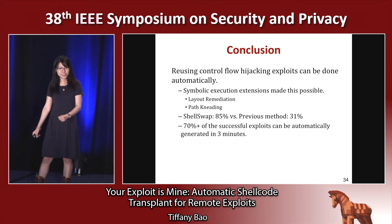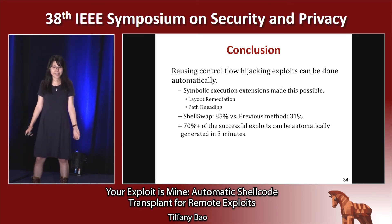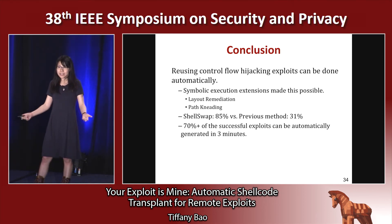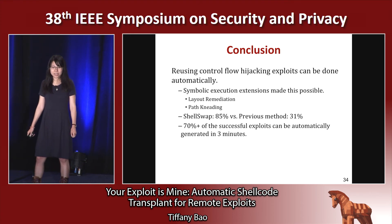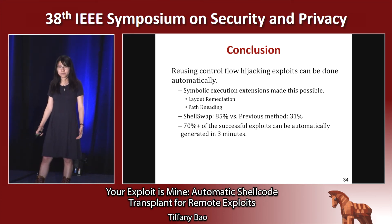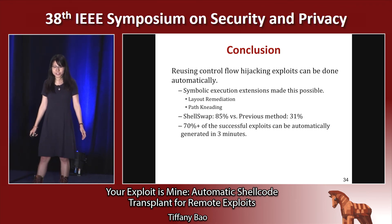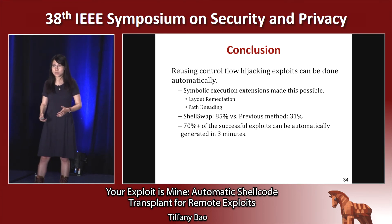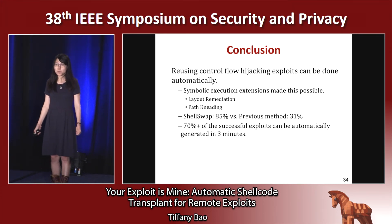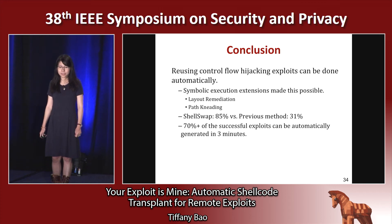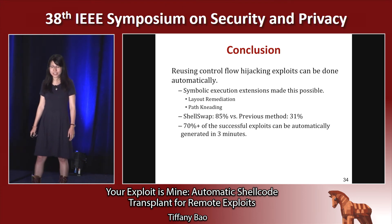In conclusion, we show that reusing control flow hijacking exploits can be done automatically. Symbolic execution plus our two methods makes this possible. The first method, layout remediation, changes the layout of the shellcode and thus changes the constraints caused by the shellcode. The second approach, path knitting, changes the path execution and leads the program to be exploitable, thereby changing the path constraints. We propose system ShellSwap, which is able to generate 85% of the new exploits, and among them, 70%+ of the successful exploits can be automatically generated in three minutes.